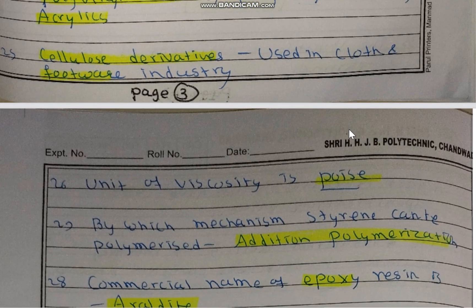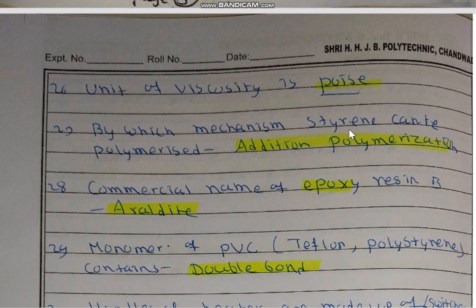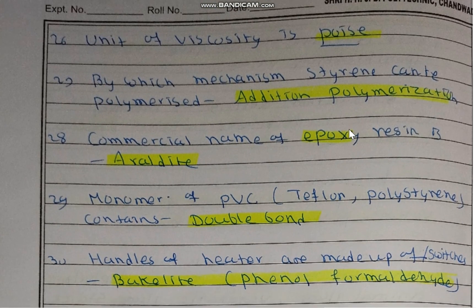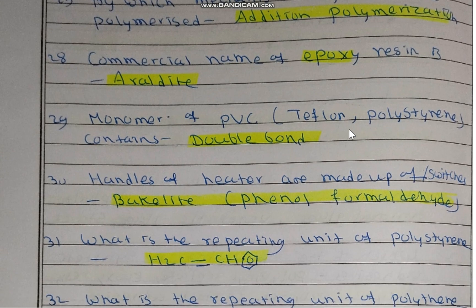Cellulose derivatives are used in the cloth and footwear industry. The unit of viscosity is poise. By which mechanism can styrene be polymerized? Styrene is polymerized by addition polymerization — it is a homo type of polymer. The commercial name of epoxy resin is Araldite.